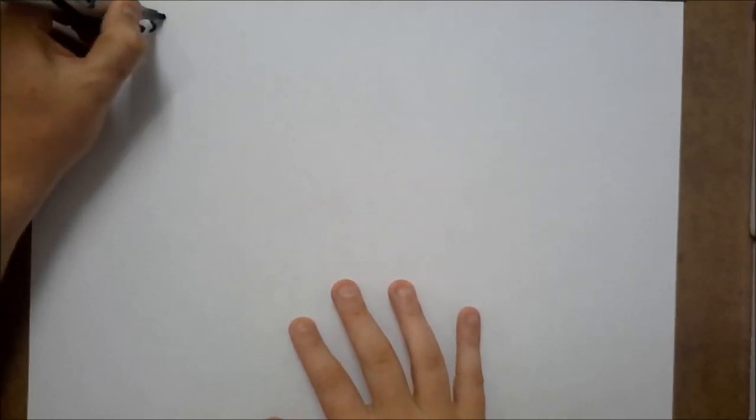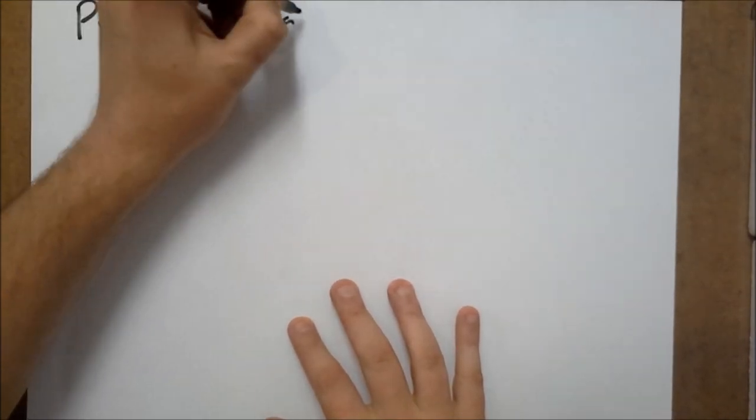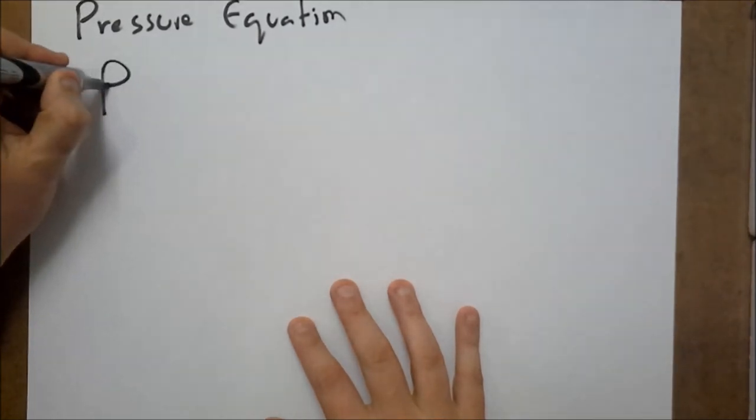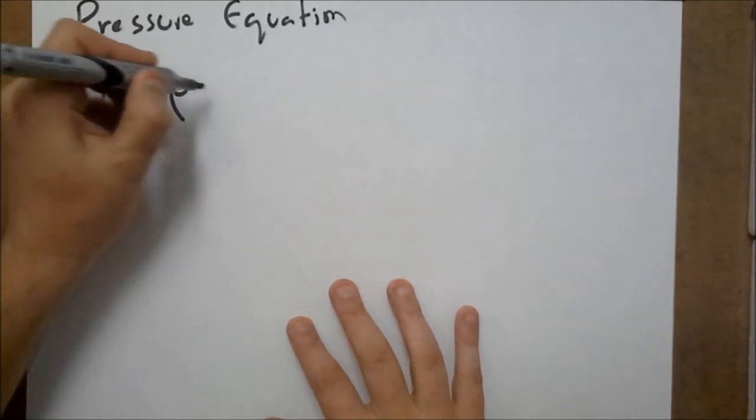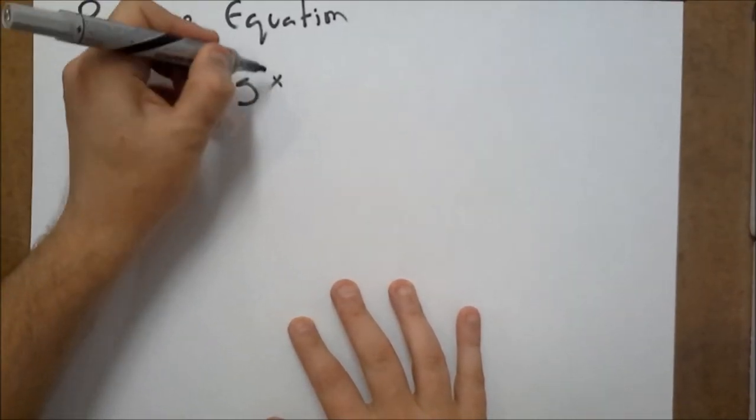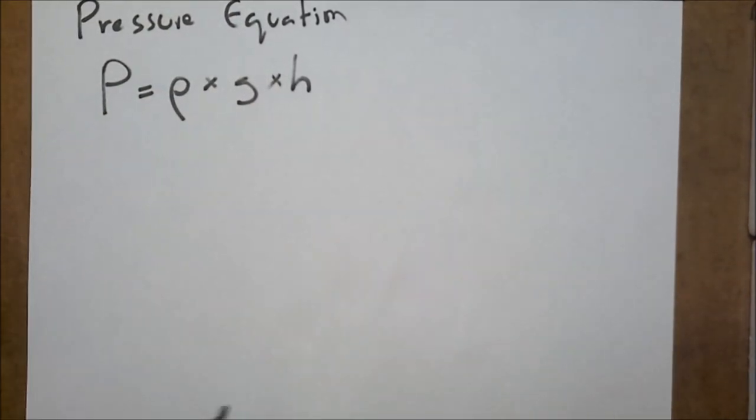Okay guys, today I'm going to revise with you the pressure equation. Now, the pressure equation says the pressure of a liquid is equal to the density of the liquid times gravitational acceleration times the height of the liquid. Now, this is an equation that you have to learn how to derive.